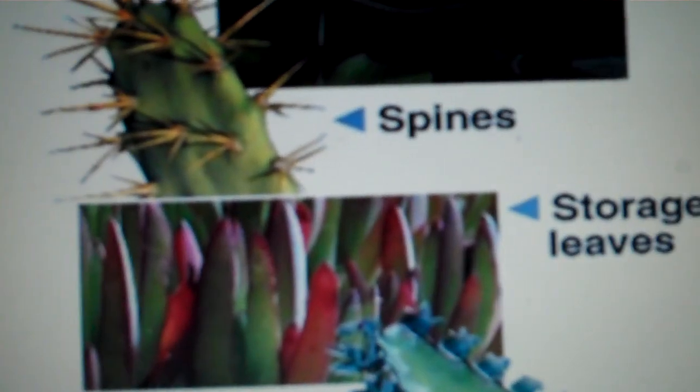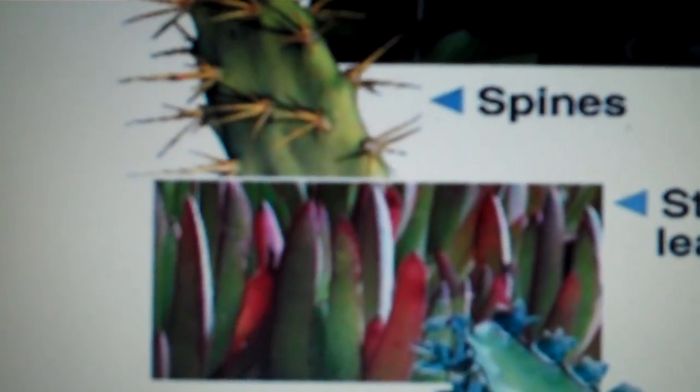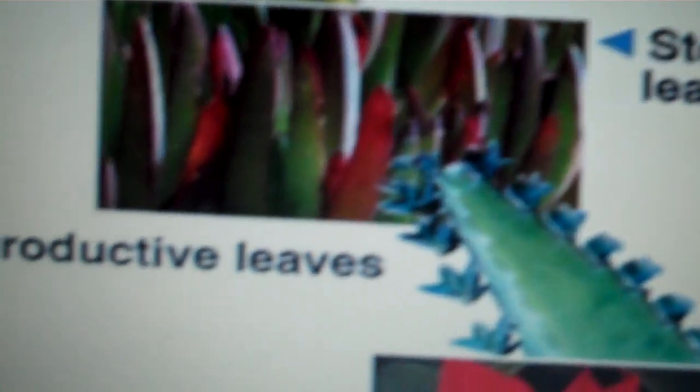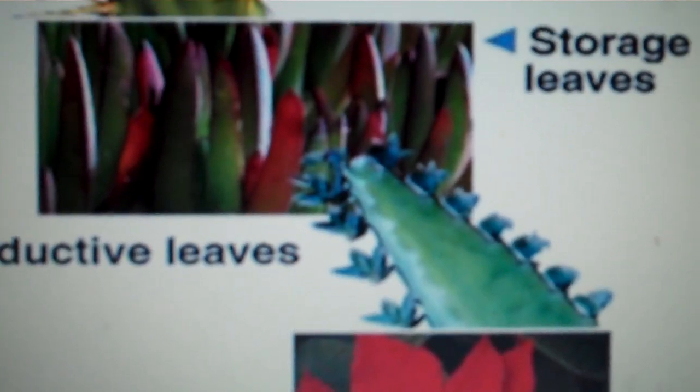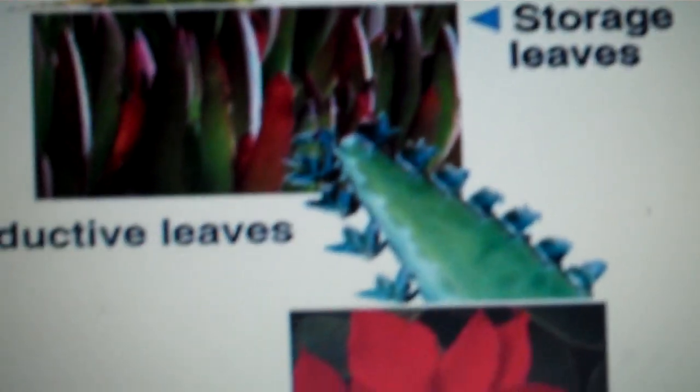We have storage leaves. This is a common ice plant you might see on the side of a freeway, going to store water. Then we have reproductive leaves. These leaves on little leaflets on the outside of the plant can drop off and grow into new ones.